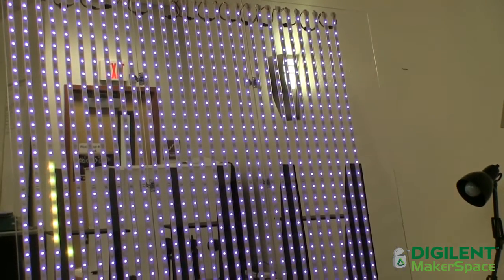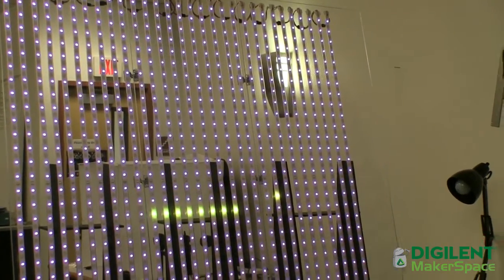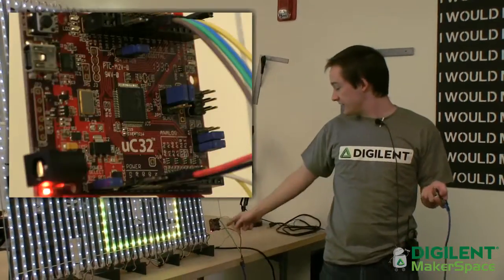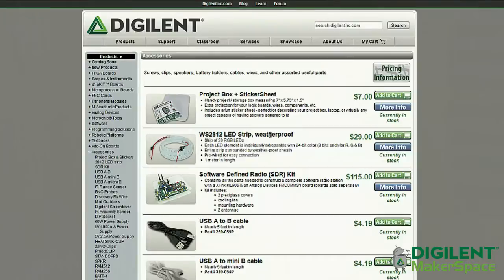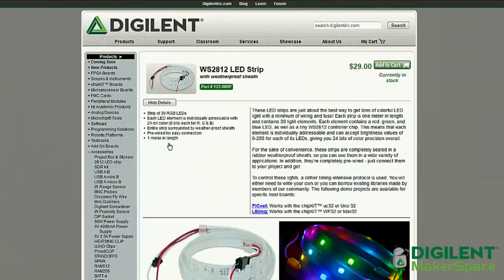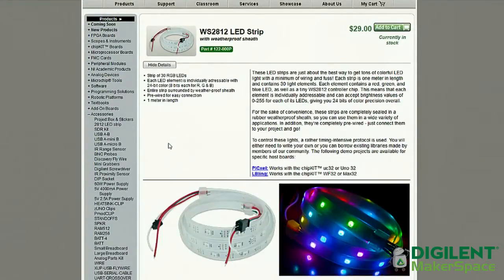The LED board was made by all Digilent products minus the plexiglass. This is a UC32 device. The LED strips are WS2812. You can get those on the website. All this is going to be available on the Instructables website. James Colvin is making an Instructable, which will provide the libraries and how to make everything.